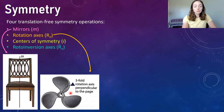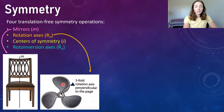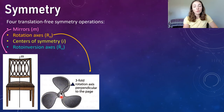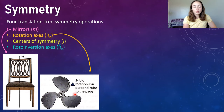A rotation axis is a line or axis you can put through an object. If that object looks exactly the same three times after a full 360 degrees of rotation around that axis, then that is a threefold rotation axis — R3. However, if it only looked identical twice during that full 360 rotation, it would be a twofold rotation axis.